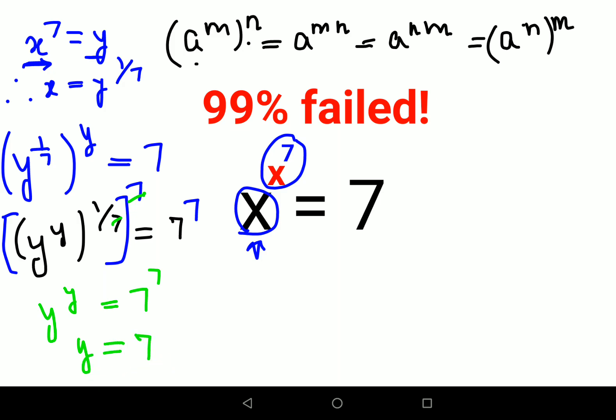But we don't need the value of y. We need the value of x. And that is nothing but y raised to 1 upon 7. Therefore, value of x can be written as y which is 7 raised to 1 upon 7.